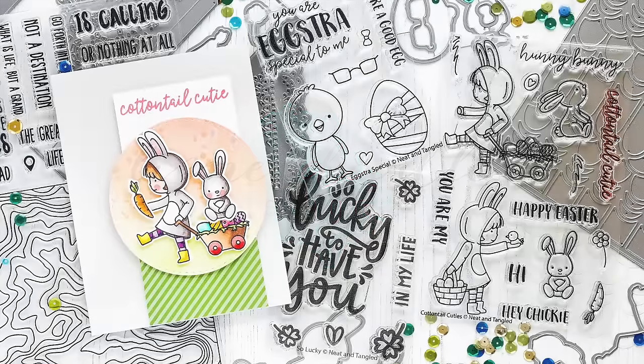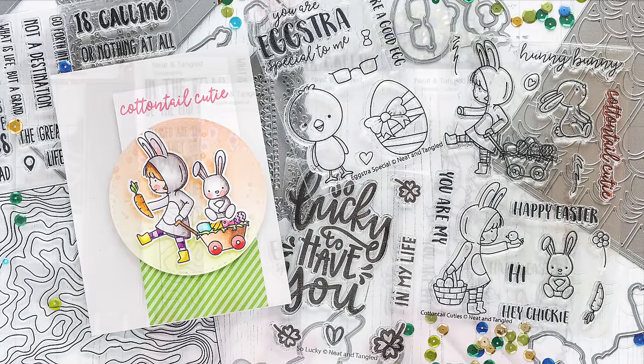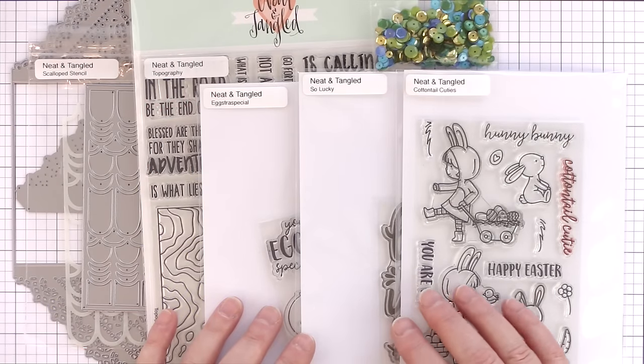Hi, this is Debbie, and today I'm going to take a look at the Neat and Tangled February release which consists of four stamp sets, two individual dies, a stencil, and a pack of sequins.